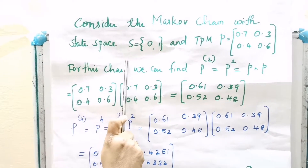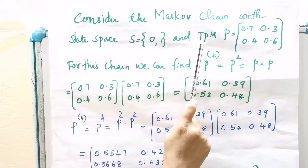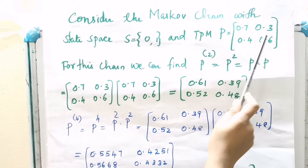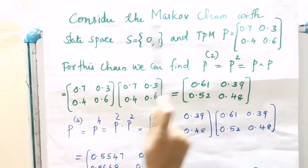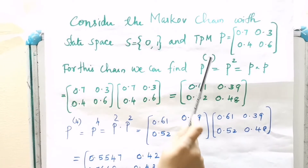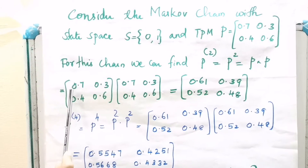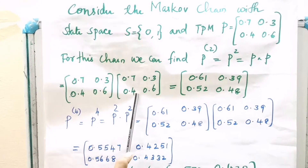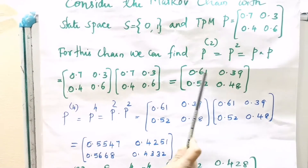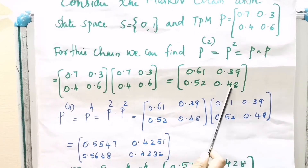For that, let's consider a Markov chain with state space S = {0, 1} and transition probability matrix P equal to 0.7, 0.3, 0.4, 0.6. For this chain, we can find P². That is, P² = P × P, which equals 0.61, 0.39, 0.52, 0.48.